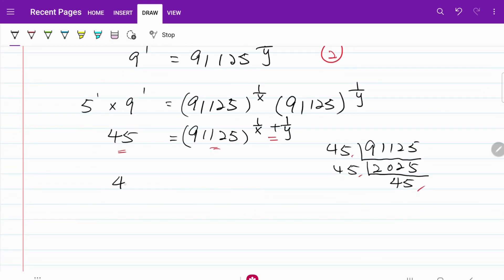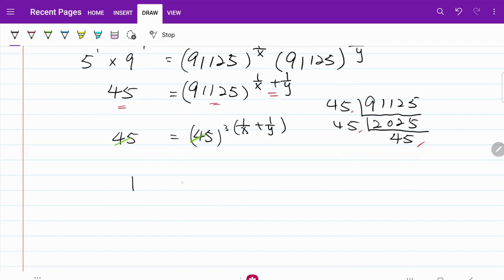I have 45 is equal to 45 cubed multiplied by 1 over x plus 1 over y. If I cancel out 45 on both sides, I have 1 is equal to 3 times 1 over x plus 1 over y.